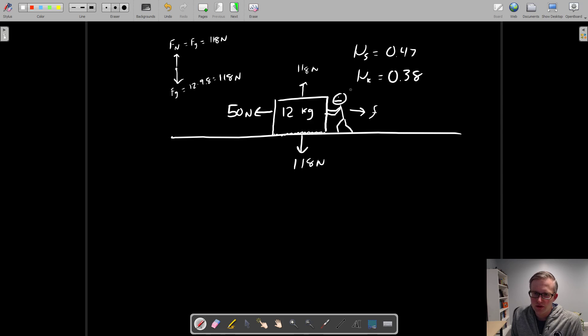In this case, if we imagine this is a stationary box and you've come along and you're about to move it, we don't actually know if it's moving yet. So the first thing I'm going to do is solve for the static friction. The equation for that is mu_s multiplied by the normal force. I have 0.47 and my normal force was 118, so the static friction is 0.47 times 118, which we'll call 55 newtons.